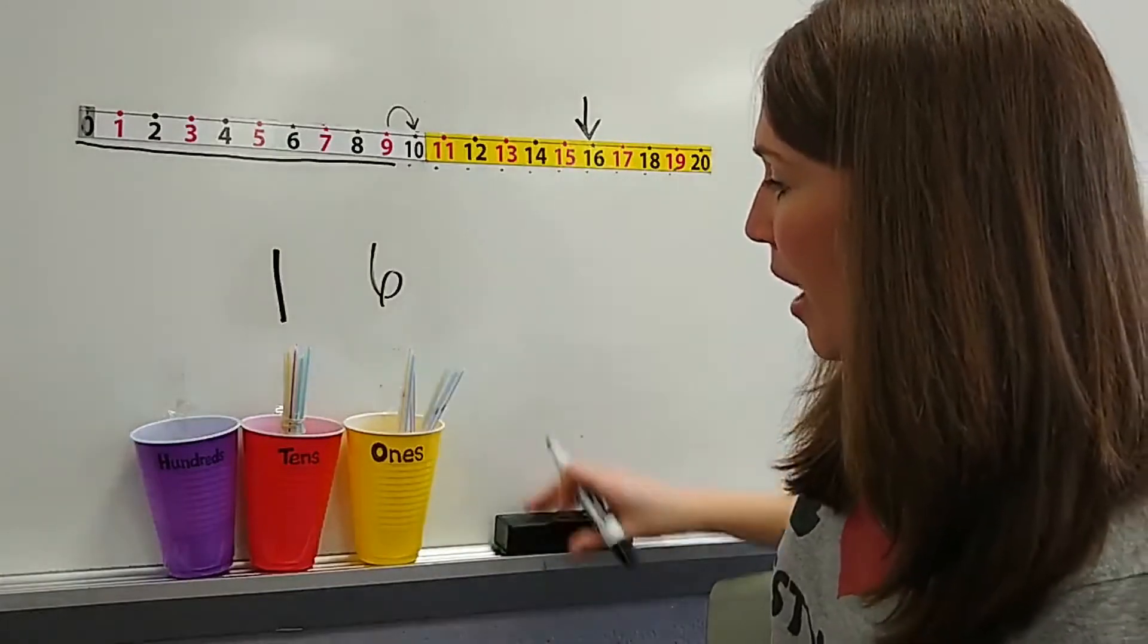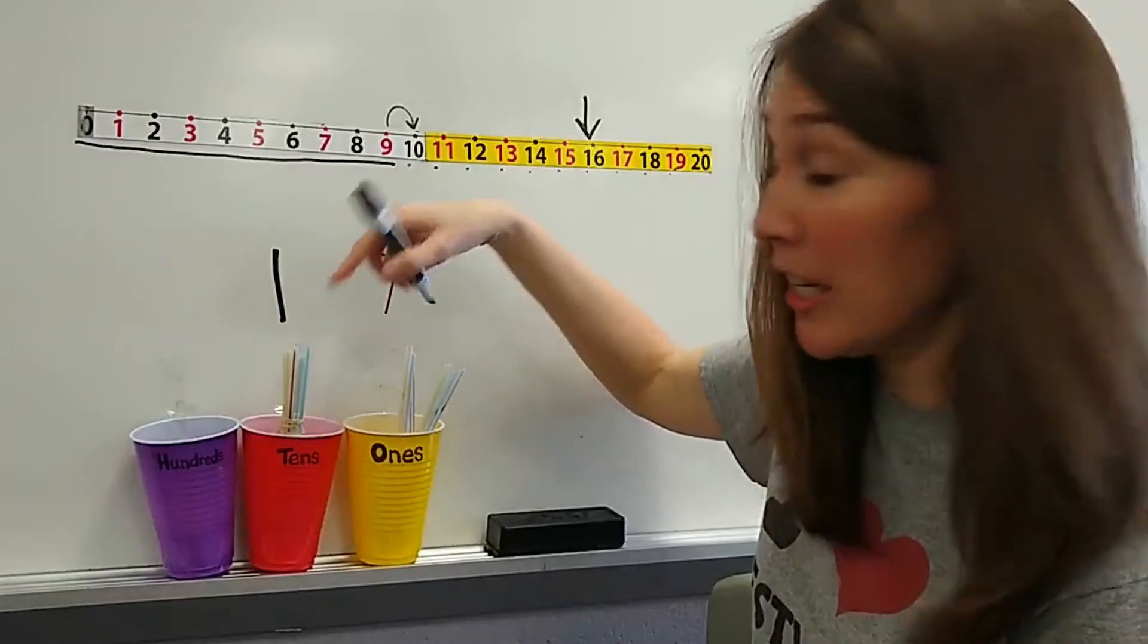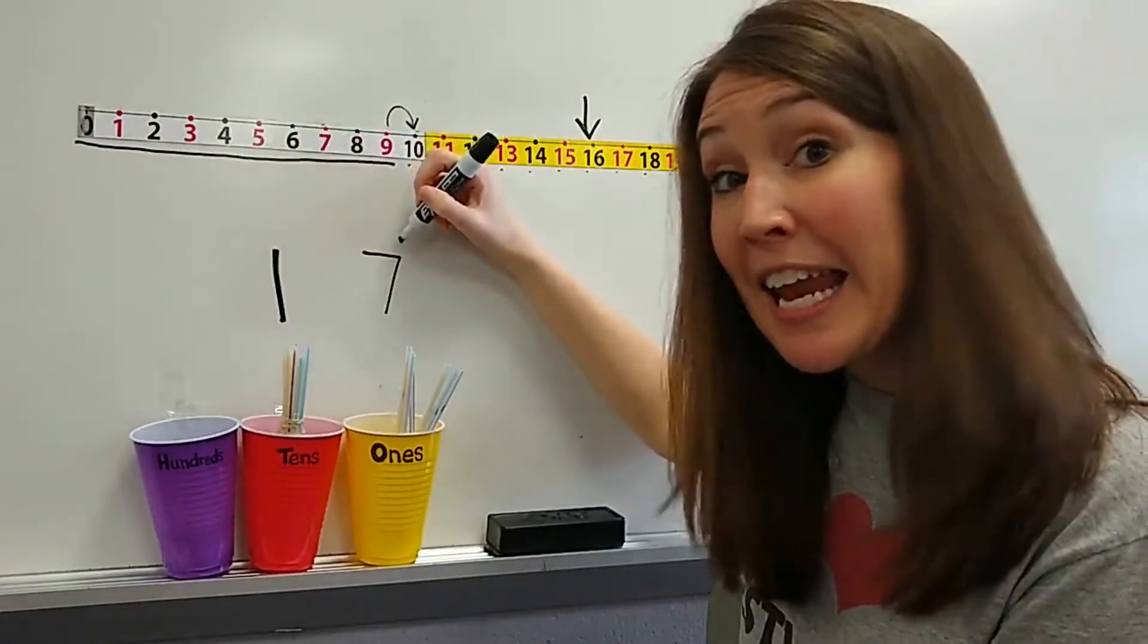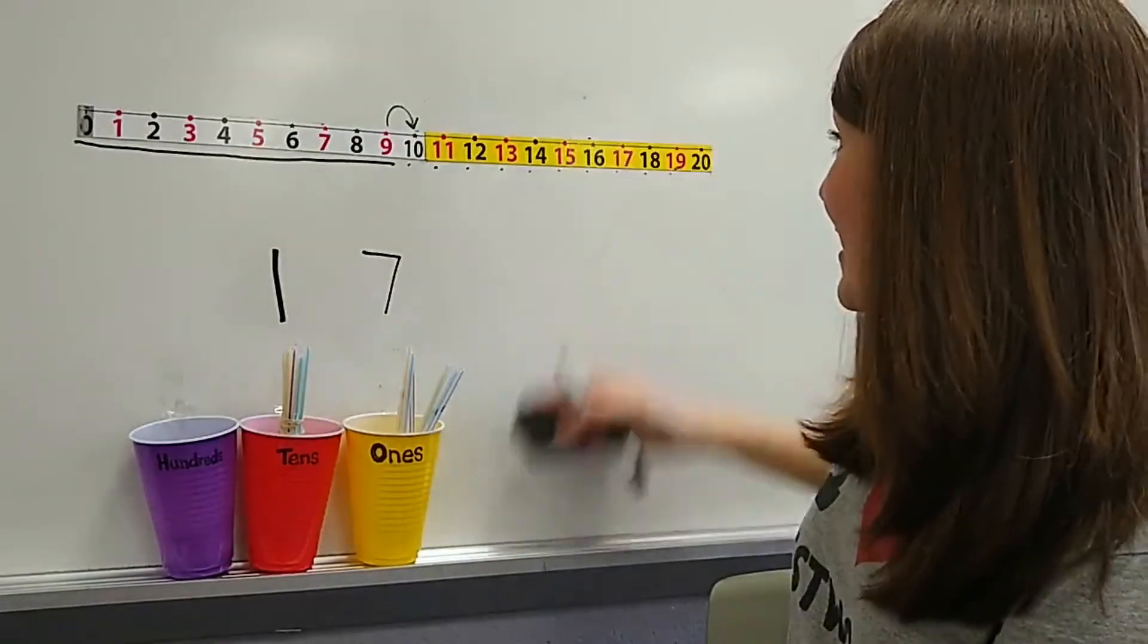If I add one more, how many are in the ones cup? Seven. That's all that's changing. This didn't change, did it? One group of 10 and seven little ones. My number is 17.